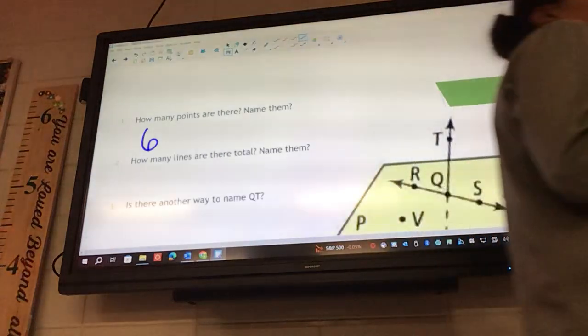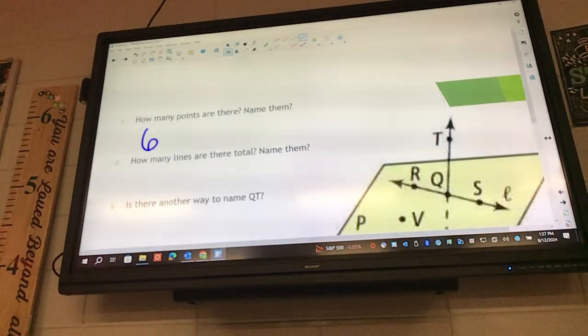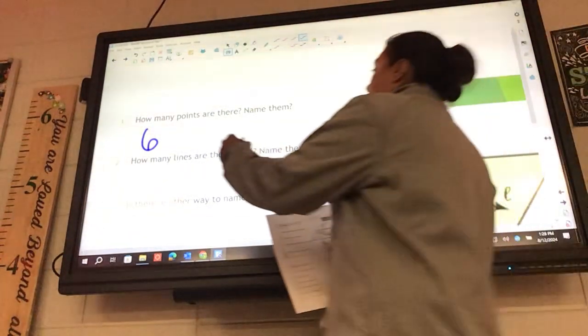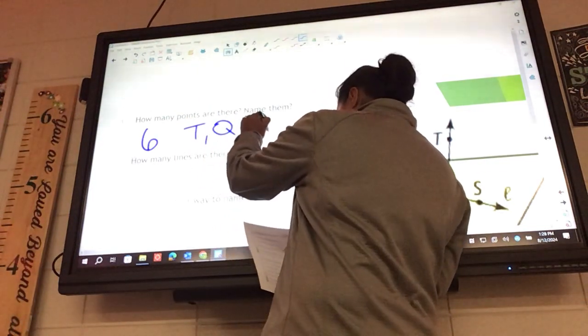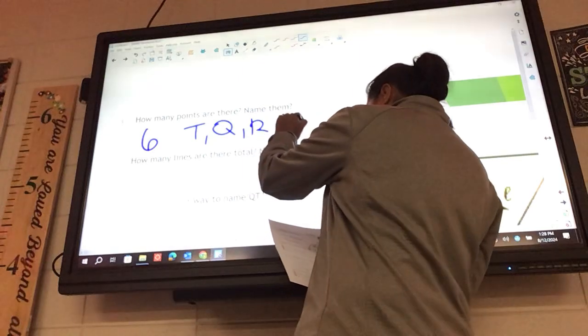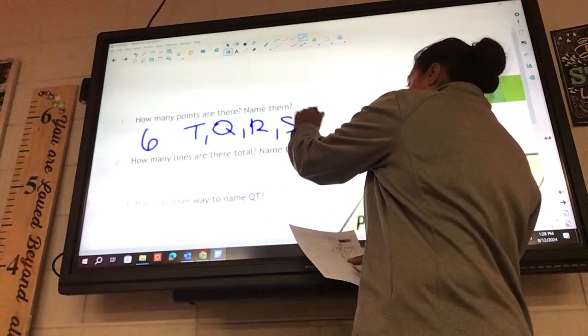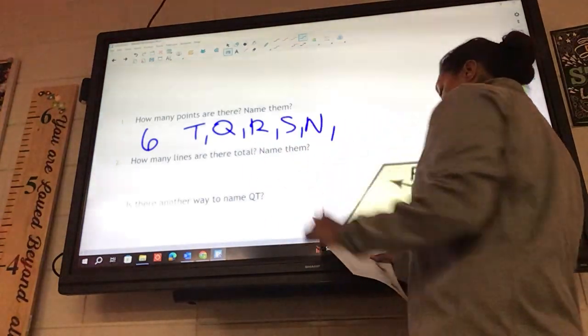And then it says to name them. So what are the six points? Slow down, I got T, what else? Q. R. S. N. V.